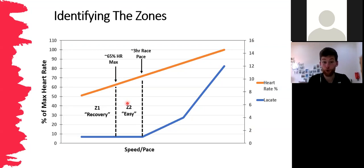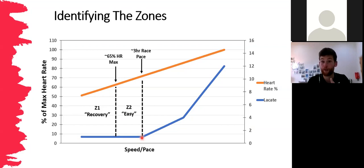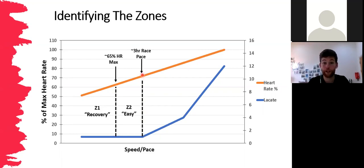Zone two, or easy, is a little bit harder. Lactate is still at baseline levels but extends all the way up to the lactate threshold — the fastest speed you can run without releasing lactate into the blood. This correlates roughly with your three-hour race pace, which for some people is marathon pace. Heart rate goes up to about 75% of max. Still comfortable enough to have a good conversation, especially at the lower end of the zone.